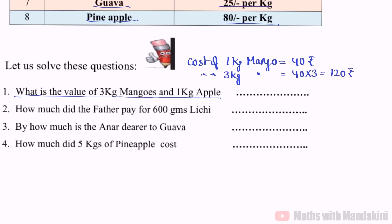And what will be the cost of 1 kg apple? Cost of 1 kg apple is equal to, it is also 120 rupees. So total cost will be 240 rupees.